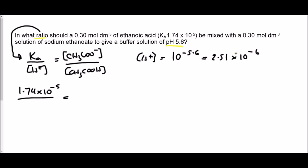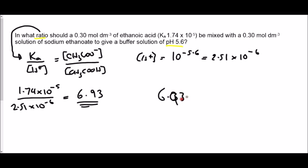We've got our H⁺, and that goes down into this expression. Then all we need to do is calculate the answer. And that's our final answer — it's asking us for a ratio, and the ratio is 6.93 to 1 of ethanoate ion, or sodium ethanoate, to ethanoic acid.